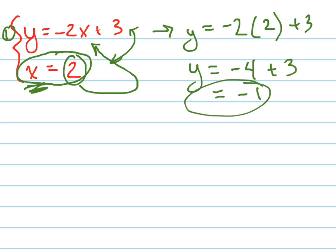What was x? What did x equal? x equaled positive 2. So y equals negative 1, x equals positive 2. My intersection point is 2, comma, negative 1.